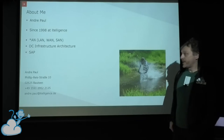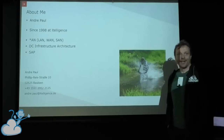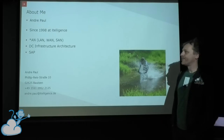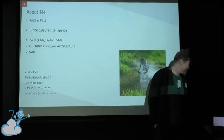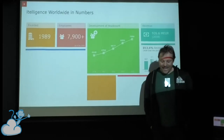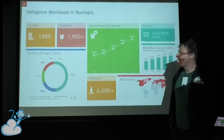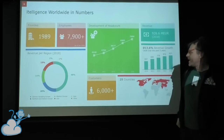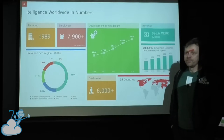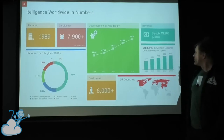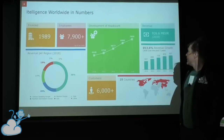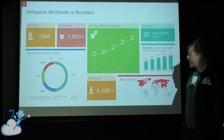I also do sports sometimes on a private level — everything about biking, and in wintertime threading down slopes with steel-edged equipment. ITALIGENCE itself was founded in 1989. In 2018 we were nearly a 1 billion revenue company, and now we are — last year we confirmed this.